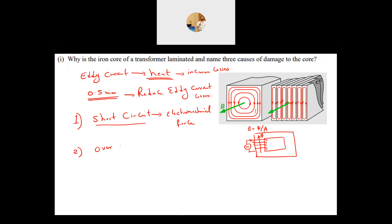The second cause is over-excitation. If you increase the voltage applied to the transformer beyond its rated value, you increase the flux density — this is called over-excitation. This causes saturation in the core, which leads to heating and can damage the insulating laminations between the core sheets.